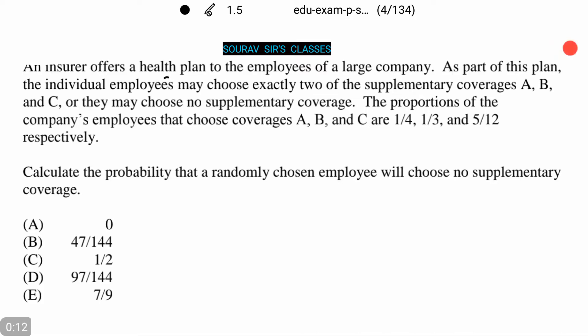Now an insurer offers a health plan to the employees of a large company. As part of this plan, the individual employees may choose exactly two of the supplementary coverages A, B, and C, or they may choose no supplementary coverage.